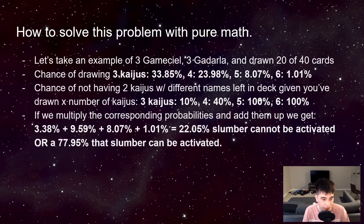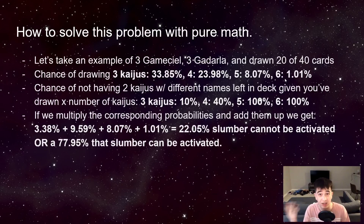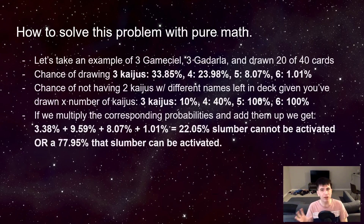Here are the probabilities. The chance of drawing three Kaijus — it doesn't matter which Kaijus — you can use the Hyper Geometric Calculator or the Yu-Gi-Oh! Party app. The chances of drawing three in the first 20 is 33.85%, four is 23.98%, five is 8.07%, and drawing six Kaijus in the first 20 cards is 1.01%.